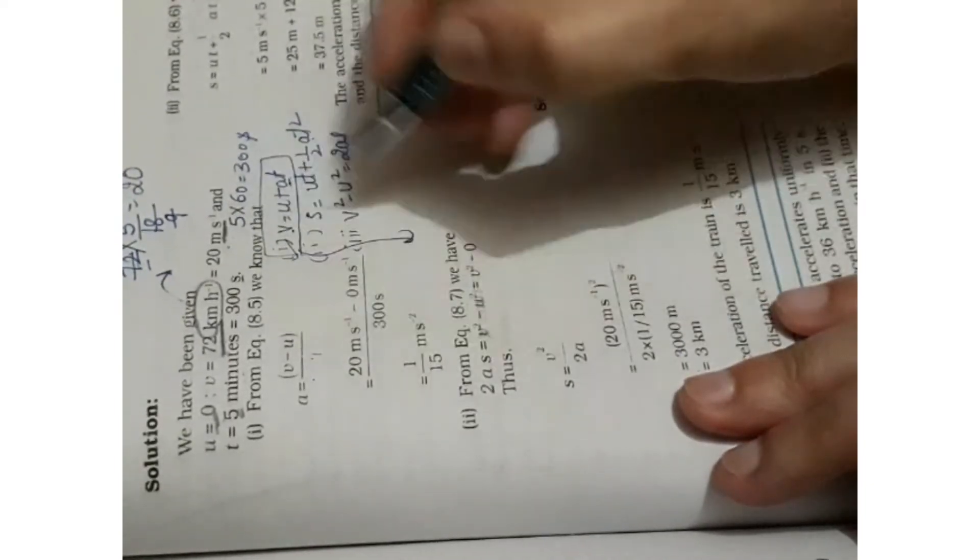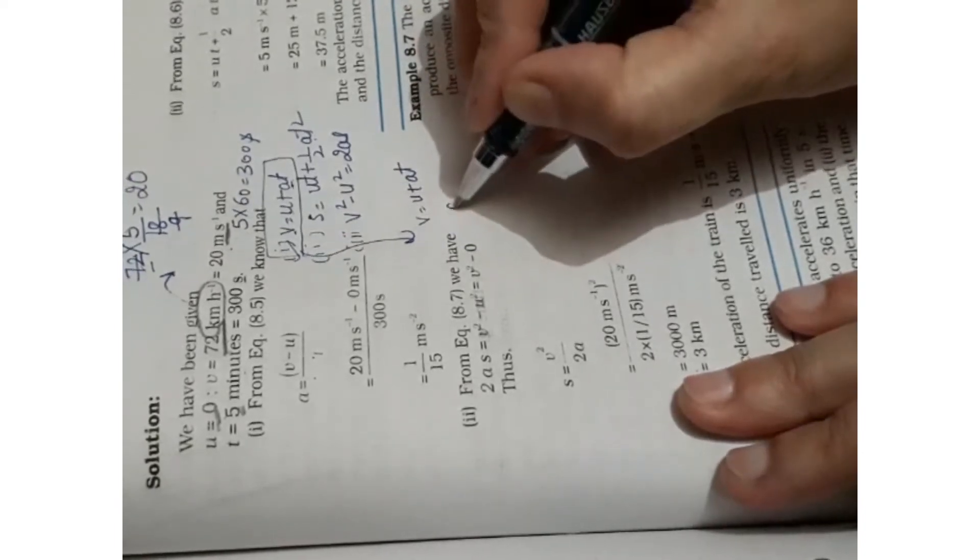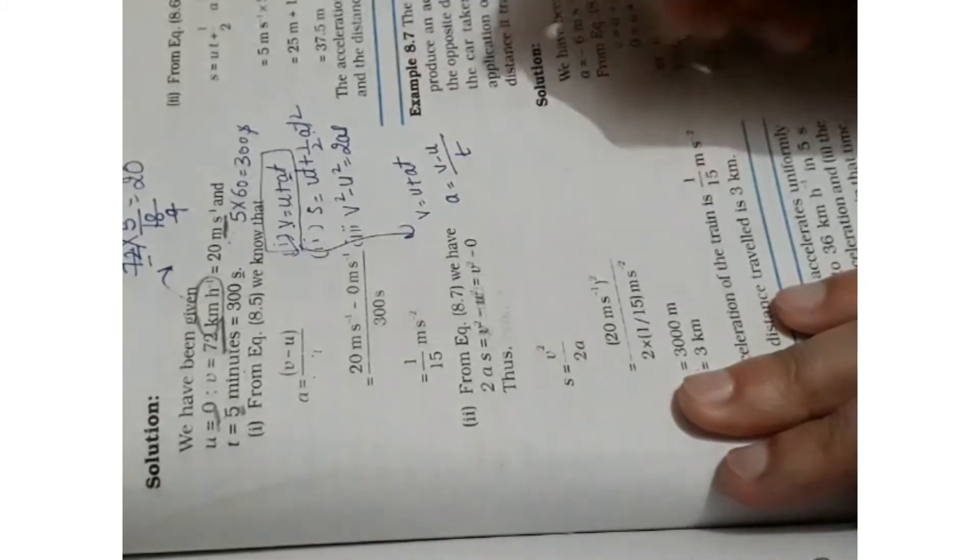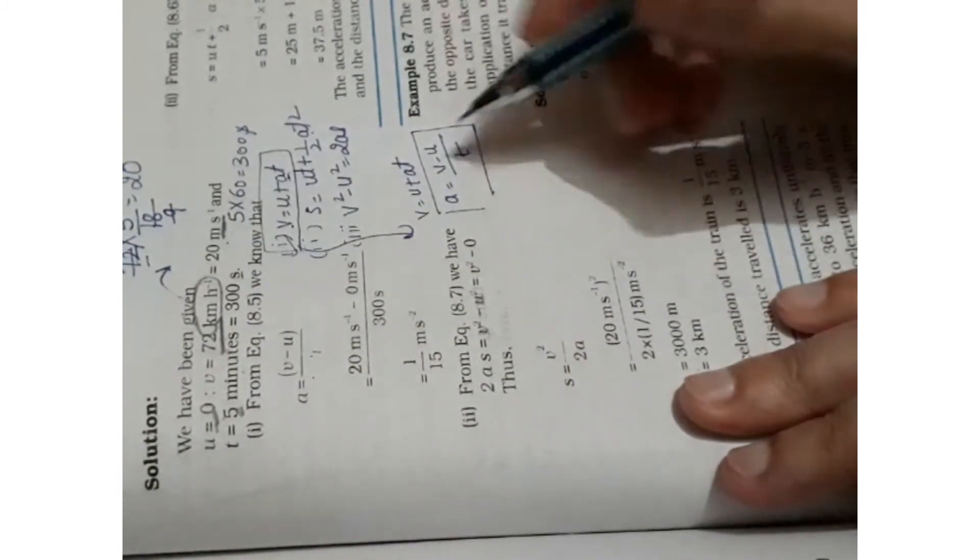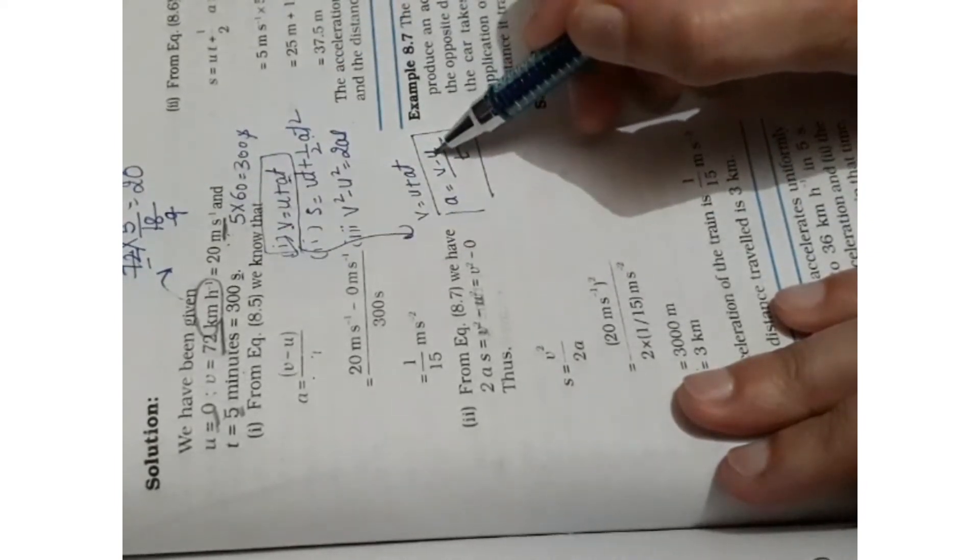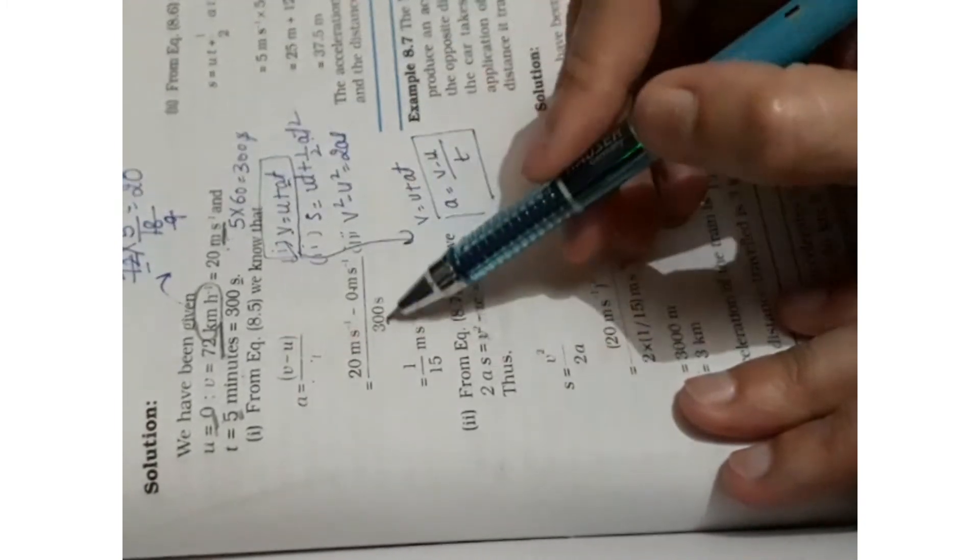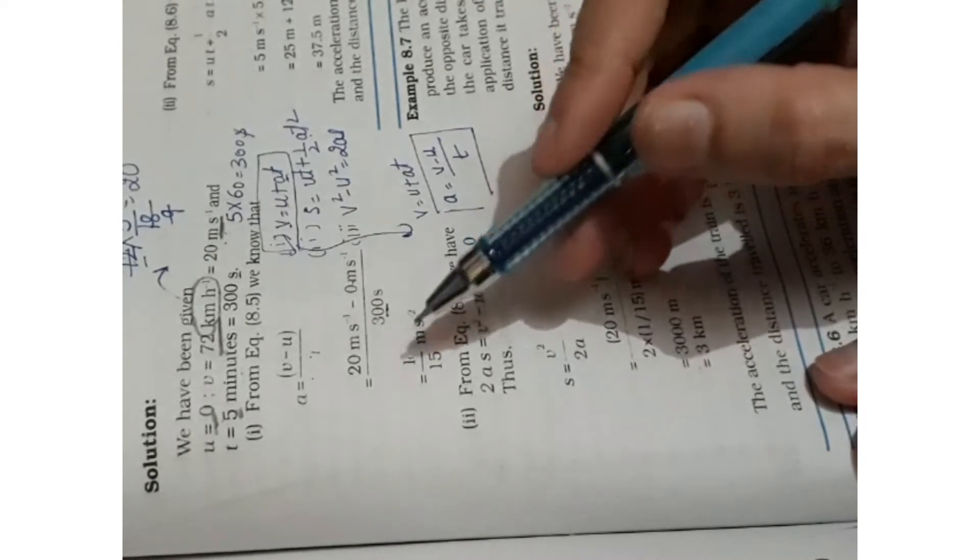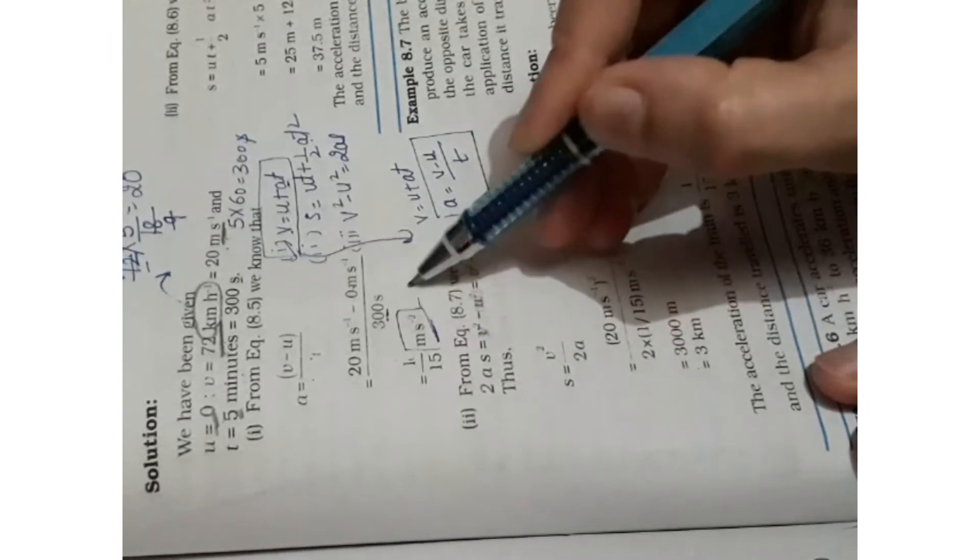So what do we do? We have written this formula here. See, v is equal to u plus at. Acceleration is to be found. So what do we do? a equals v minus u over t. So this is the formula. v value is equal to 20, u means rest is equal to 0, and time is equal to 300. So after calculating, the value is 1 over 15 meters per second square. This unit is called acceleration.